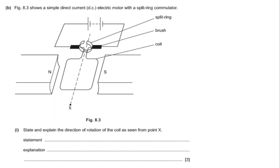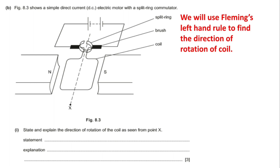We will use Fleming's left hand rule again to find the direction of rotation of the coil. The statement will be: the coil will move clockwise. You can also accept a rotation arrow marked on the diagram.